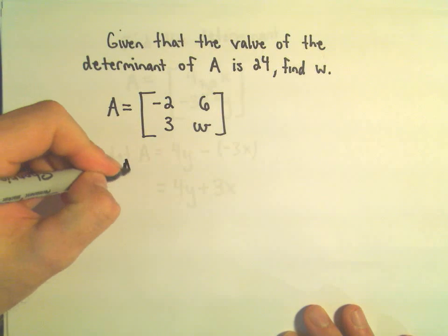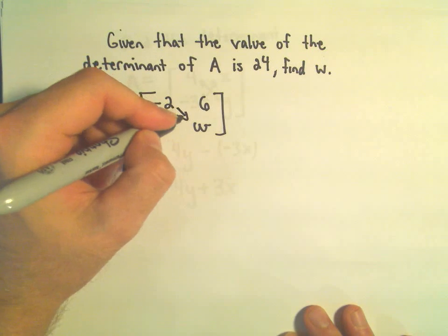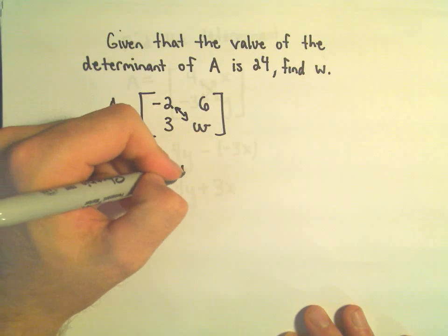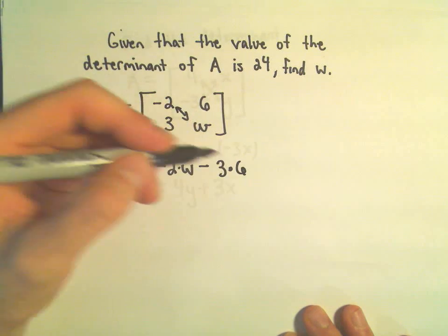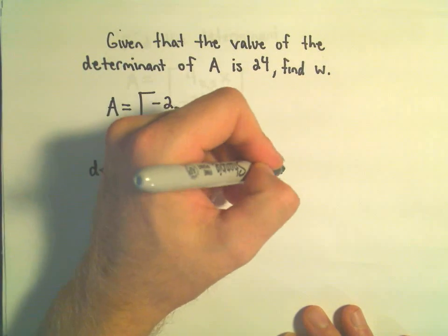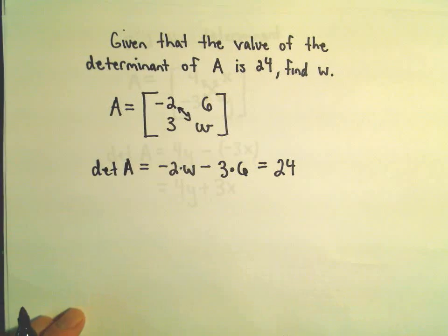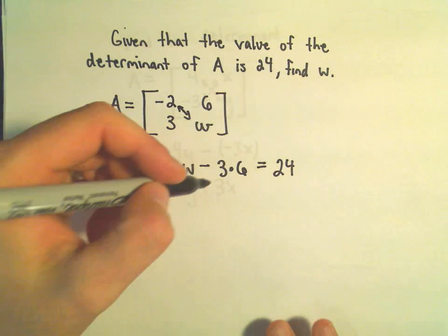Well, to calculate the determinant, we'll take negative 2 times w, and then we'll subtract away the product of 3 times 6. And we know that this determinant has to equal 24. So, now we've just got a nice little equation we can solve.